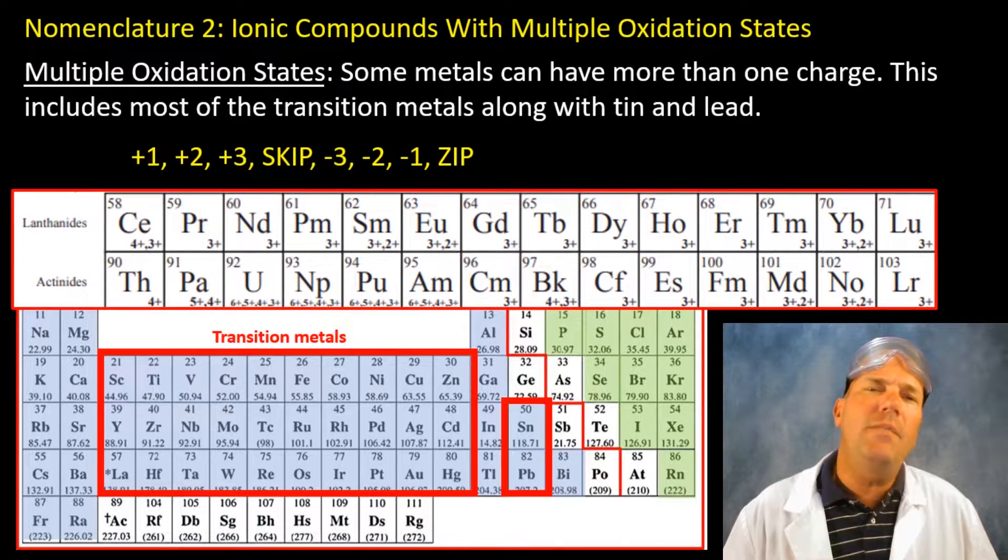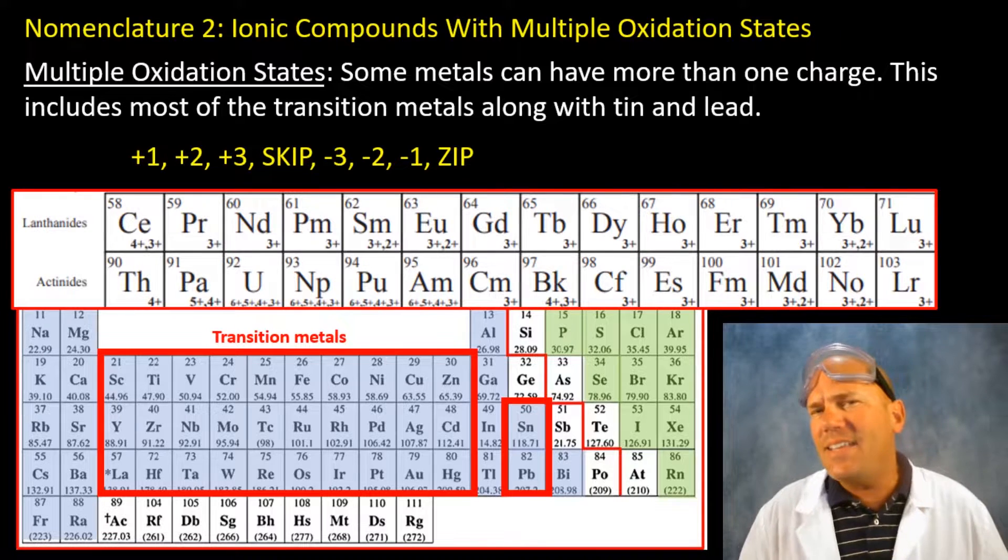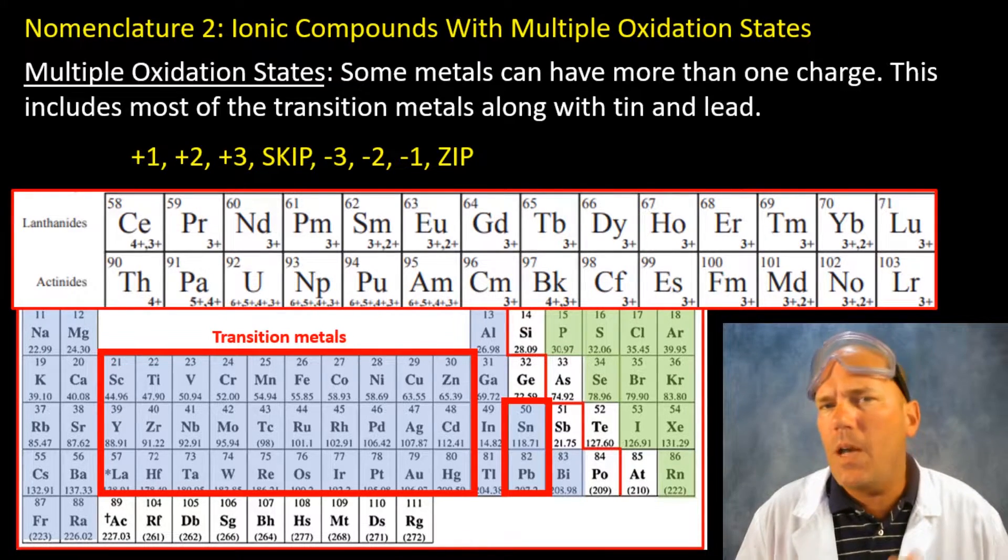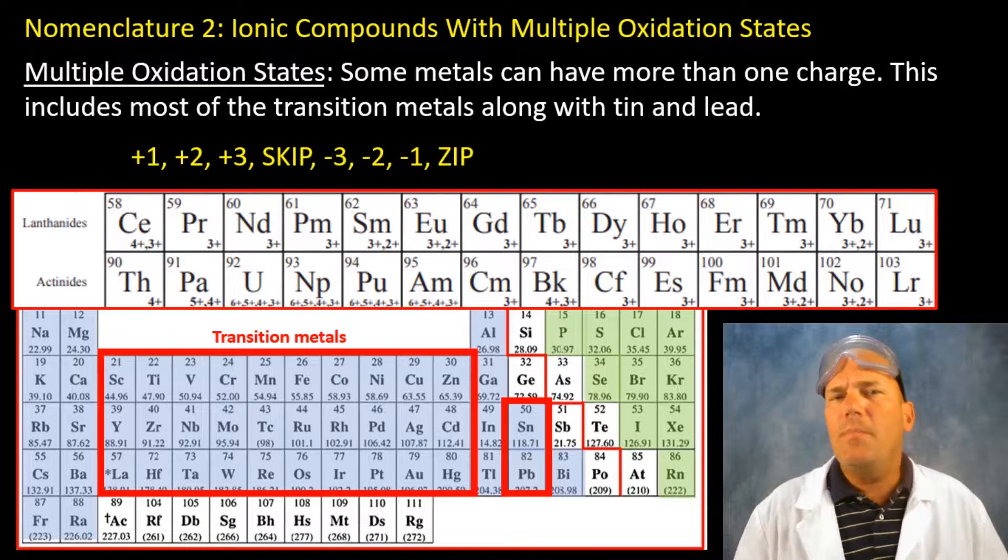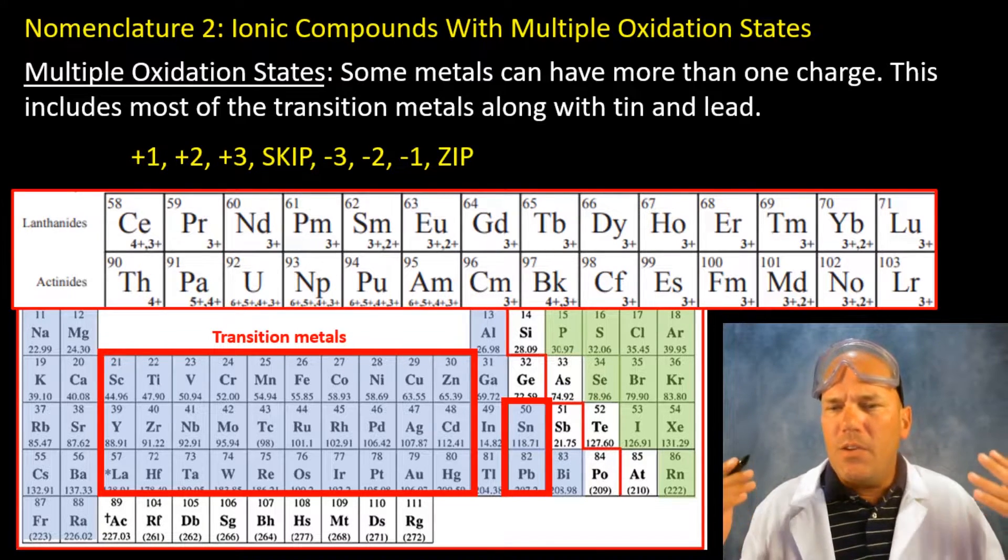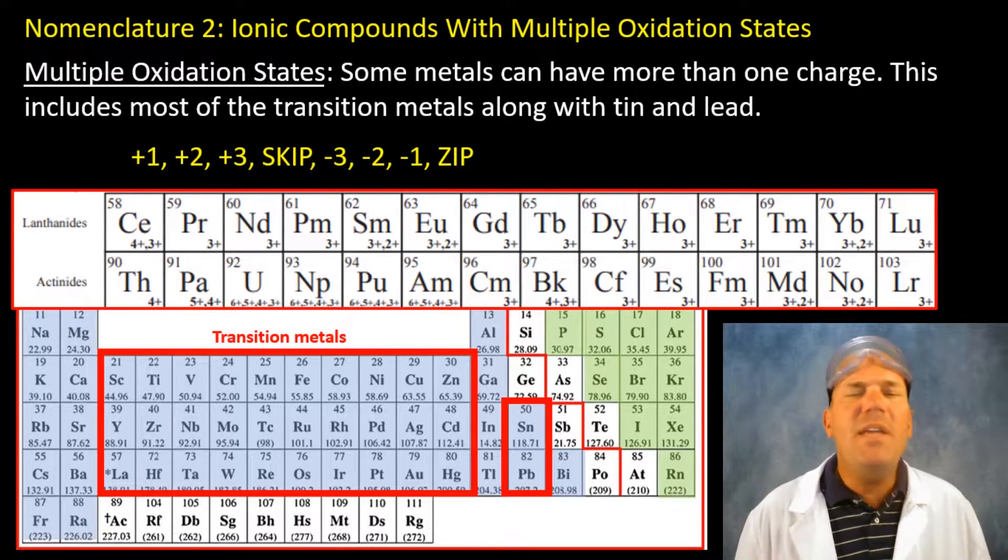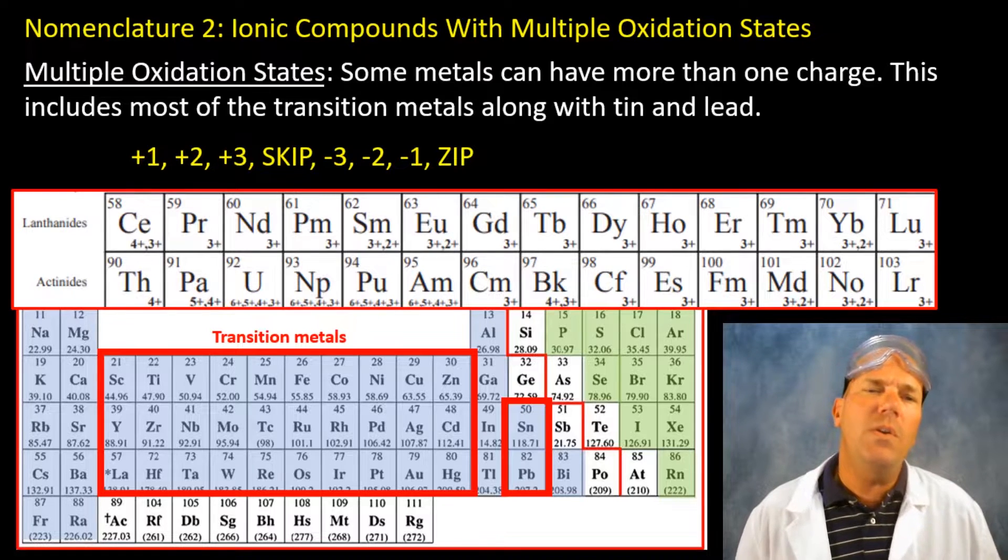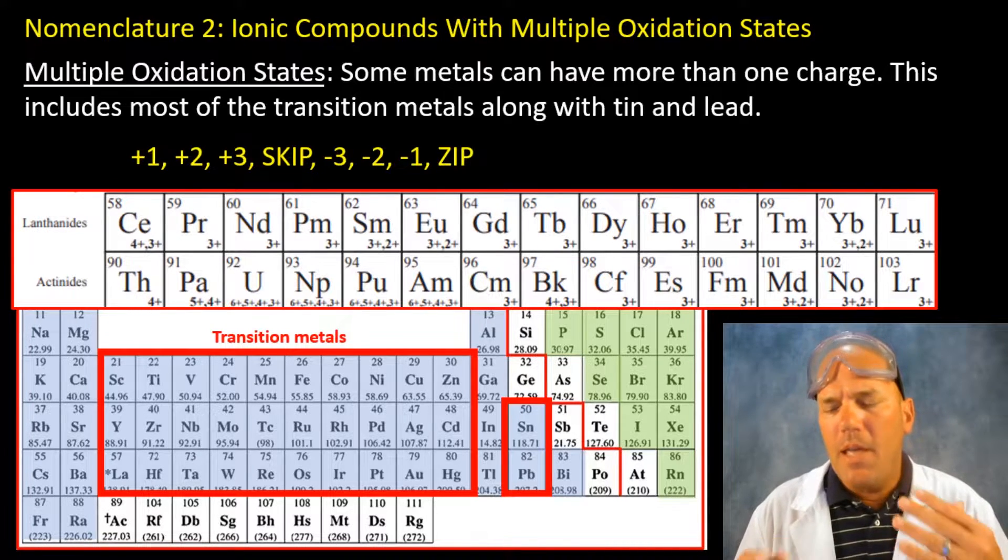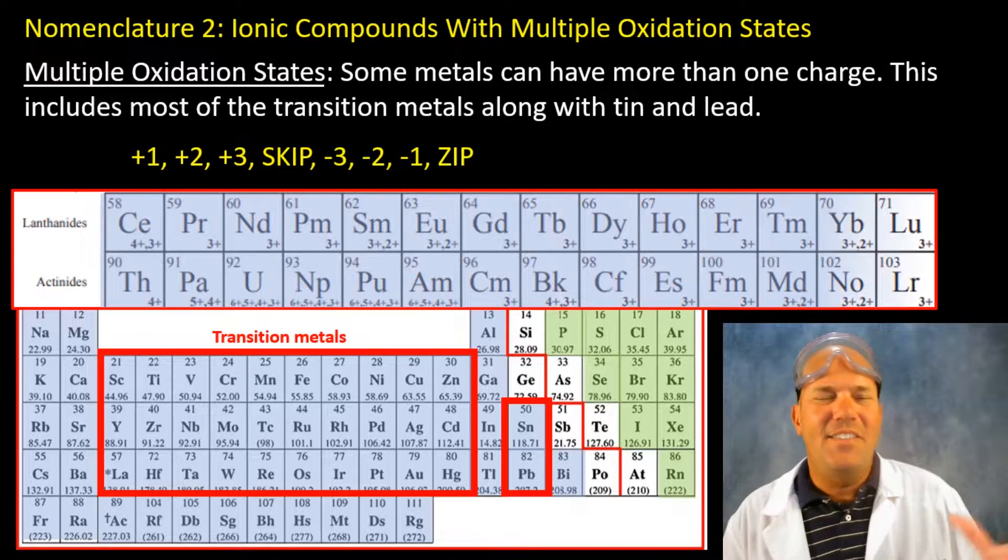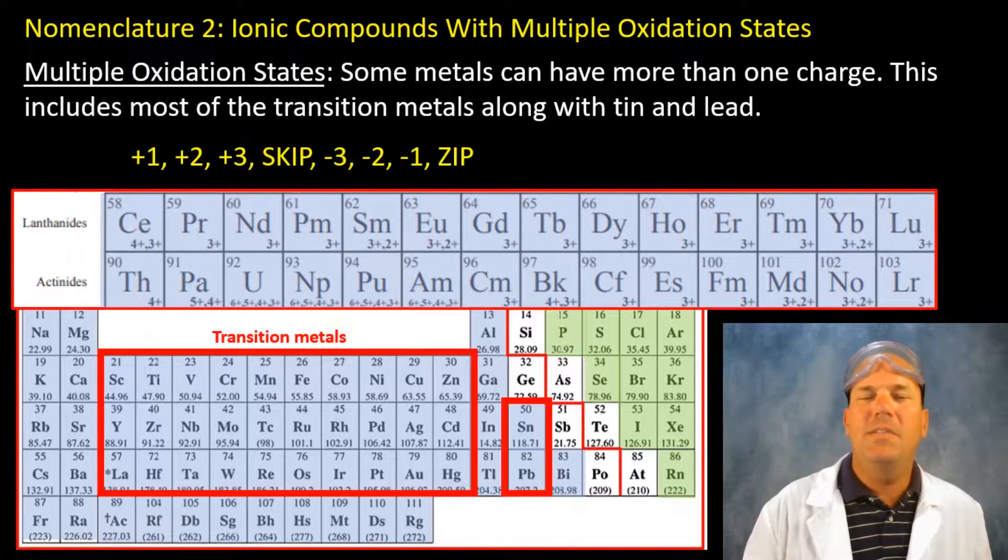I also don't want to leave out the lanthanides and actinides. Although I won't discuss them as much throughout this course, I'll talk about them more in AP chemistry and they're certainly fascinating. As you can see many of them also have multiple oxidation states. These are also metals as well.